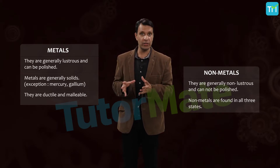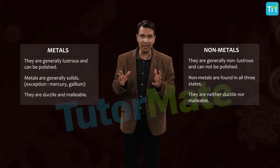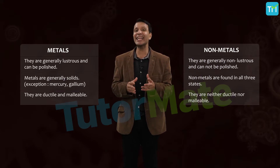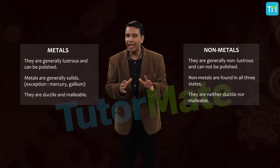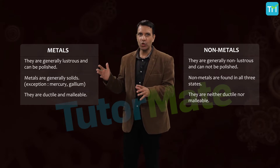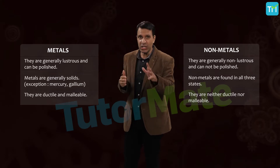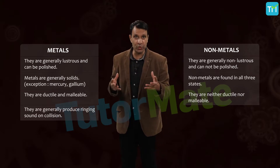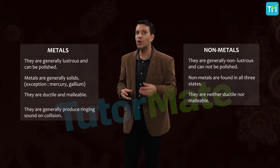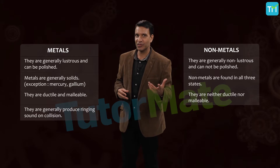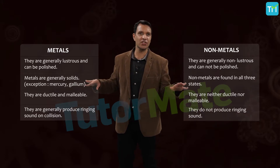Metals are also ductile, meaning metals can be drawn into wires, whereas non-metals are non-ductile and brittle solids. If you hit a metal, you get a clanging sound — this property of metals to produce a ringing sound when hit makes them sonorous, and non-metals make no such sounds.